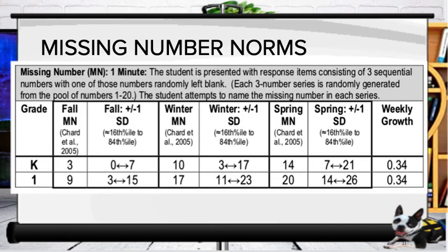Looking at the norms for missing number, we have kindergarten and first grade scores. We're expecting 3 and 9 for kindergarten and first grade in the fall, 10 and 17 in the winter, and 14 and 20 in the spring. The standard deviations appear in the column to the right of each benchmark column.